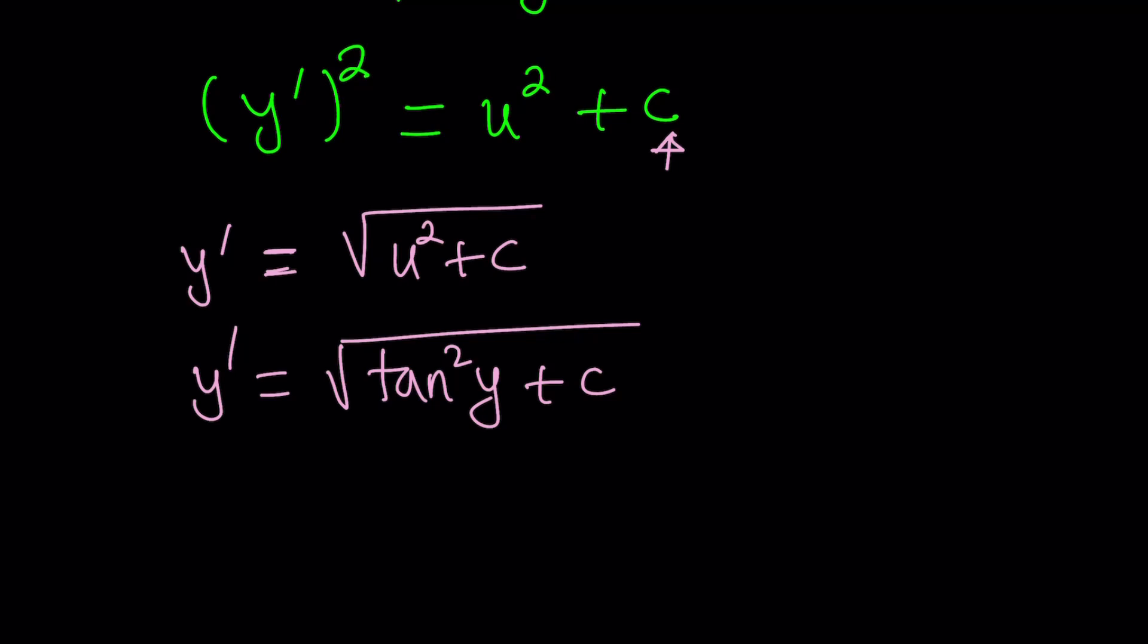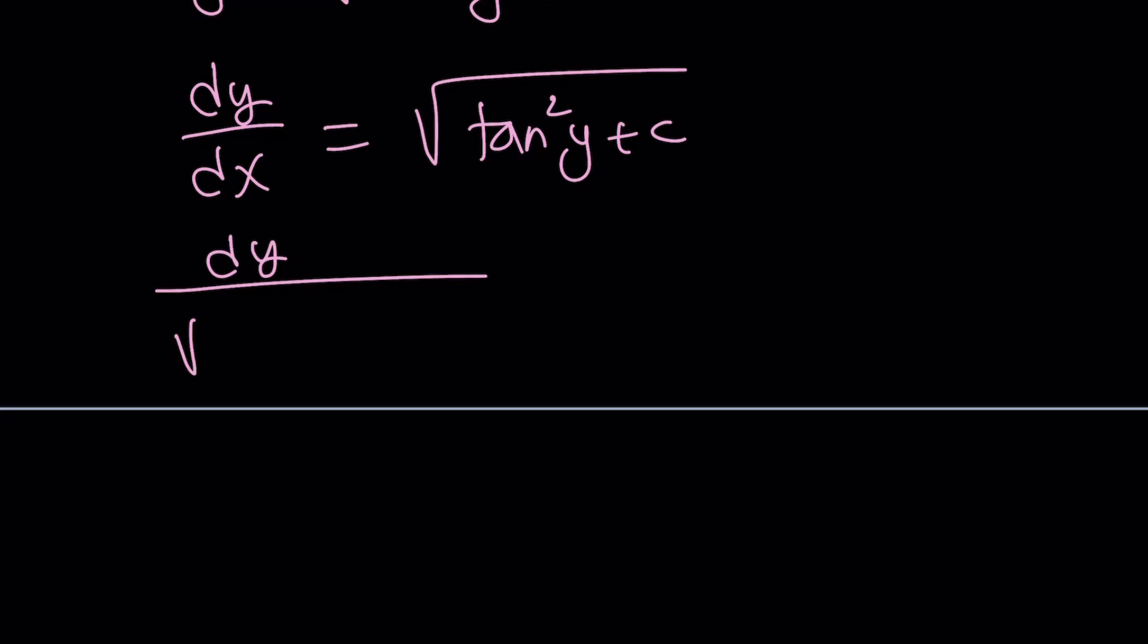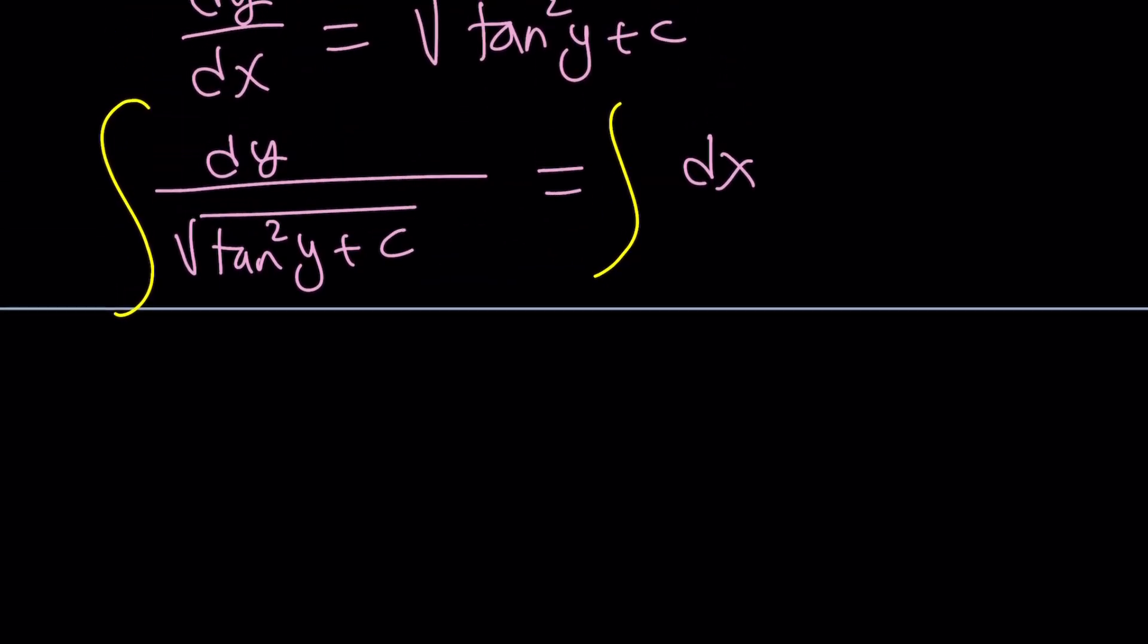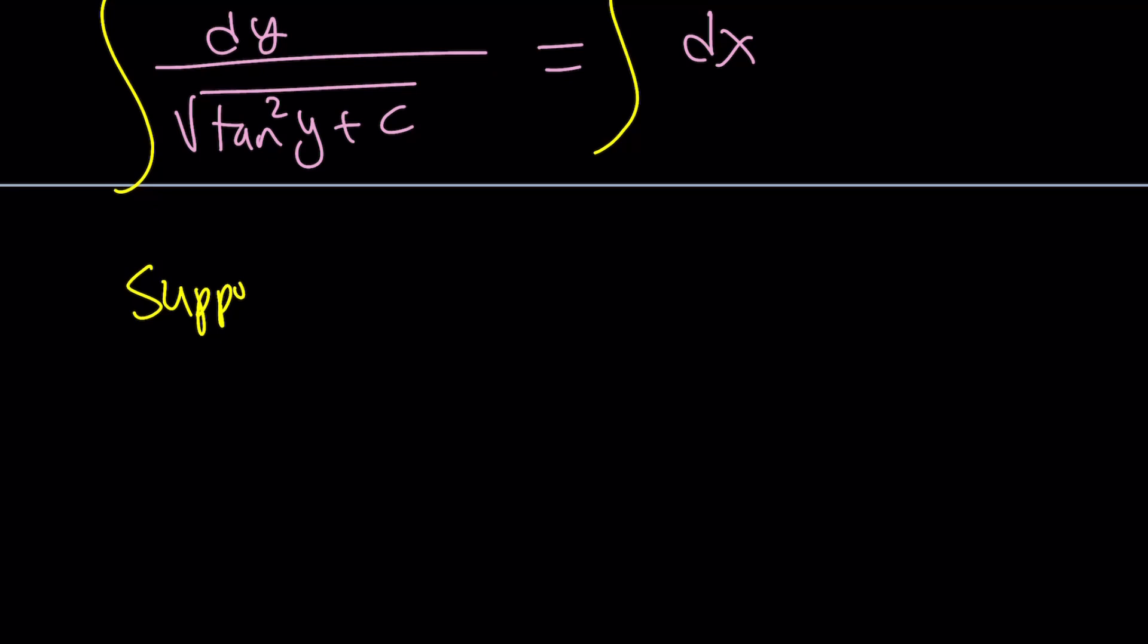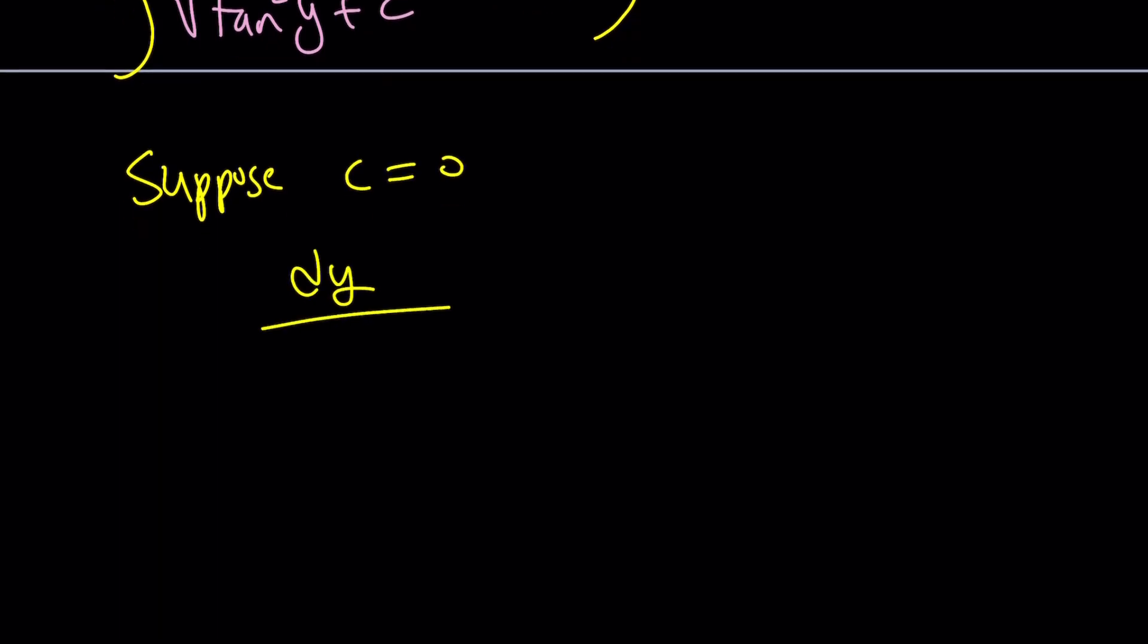After all these transformations and substitutions, we got the first derivative, a really easy separable differential equation. Let's write this as dy over dx. And now, we're going to put the y on the left-hand side. That's going to give us dy over the square root of tangent squared y plus c equals dx. And now, we can integrate both sides. For simplicity's sake, we're going to suppose that c equals 0.